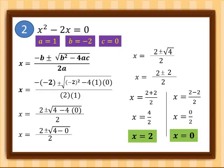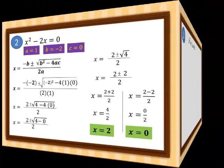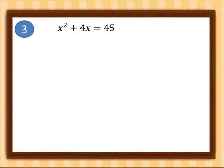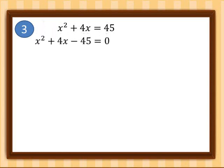Let's proceed to the third example: x² + 4x = 45. This is not written in standard form, so we rewrite it first. This becomes x² + 4x − 45 = 0. Now we get the values: a = 1, b = 4, and c = −45.